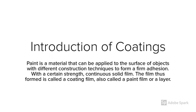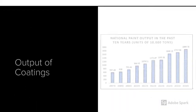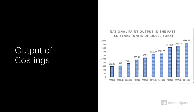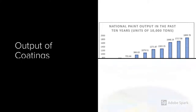Paint is a material that can be applied to the surface of objects with different construction techniques to form a firm adhesion, with a certain strength, continuous solid film. The film thus formed is called a coating film, also called a paint film or layer.